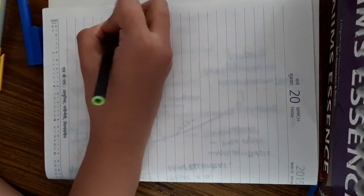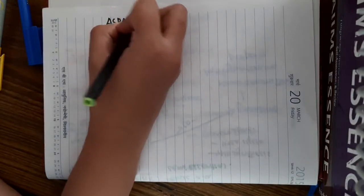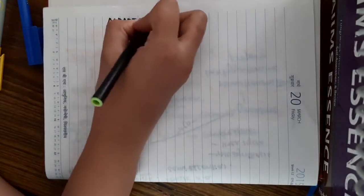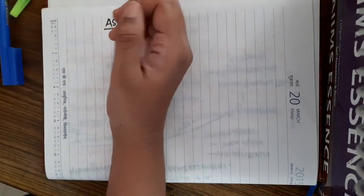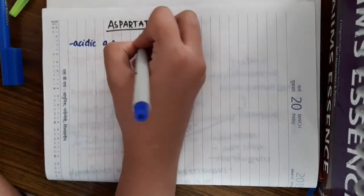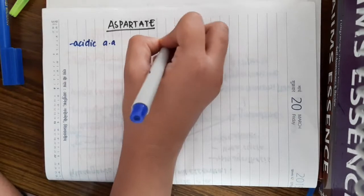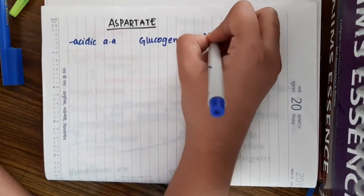Hello friends, let us learn some important points about the acidic amino acid aspartate. Aspartate is an acidic amino acid, it is glucogenic and non-essential.